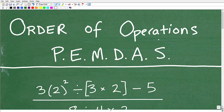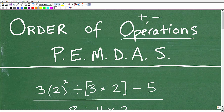"Order of operations" means something. In mathematics, operations are things like addition, subtraction, multiplication, division, and powers. These are examples of mathematical operations — mathematical operators.